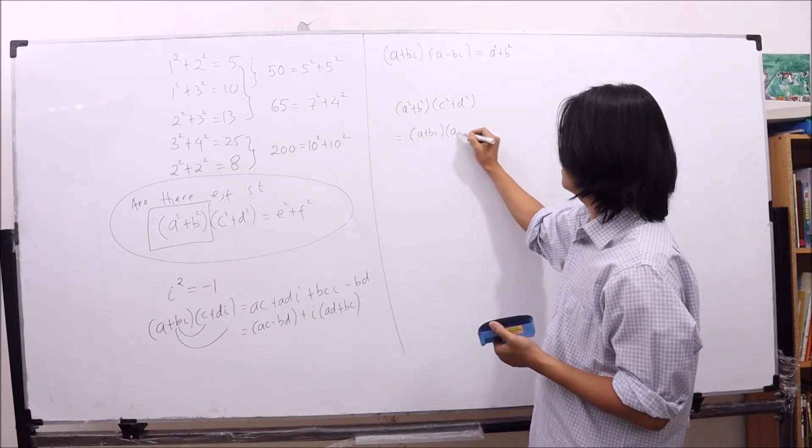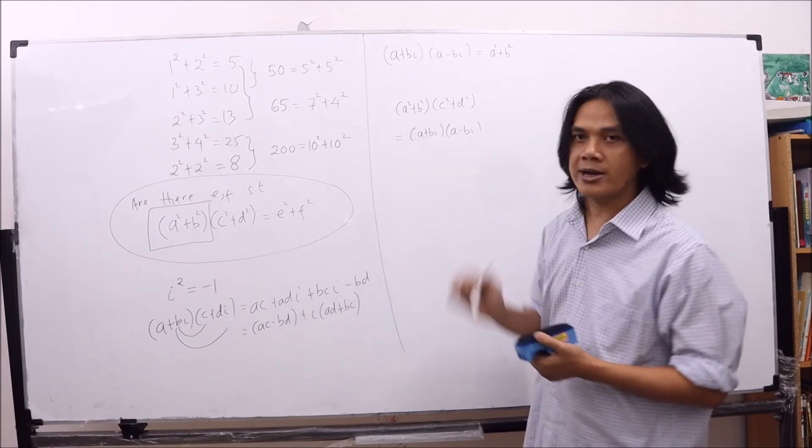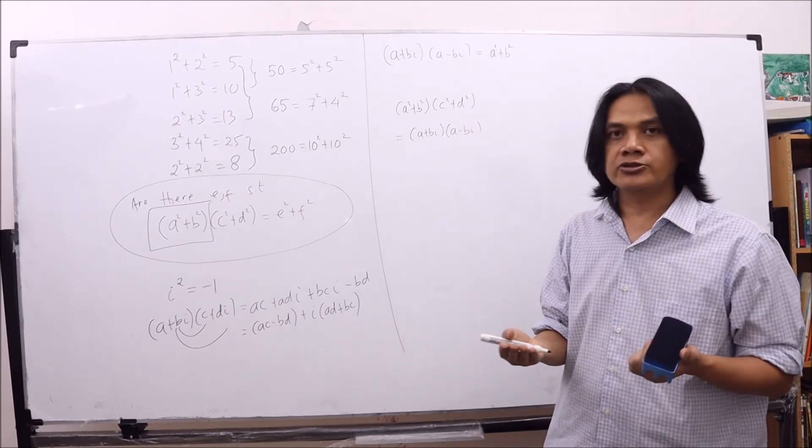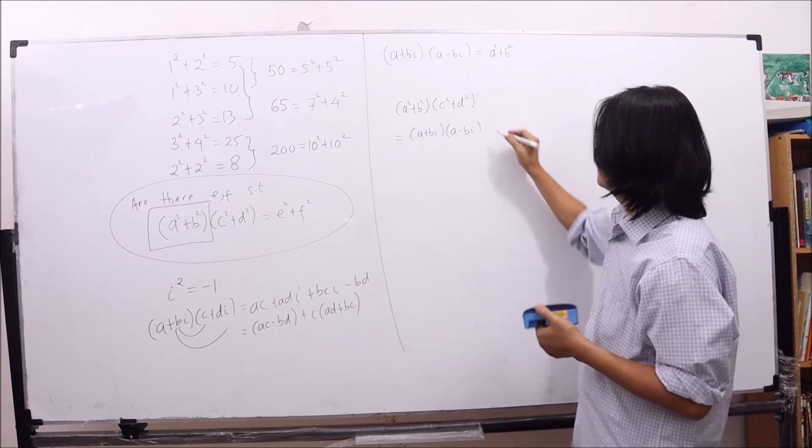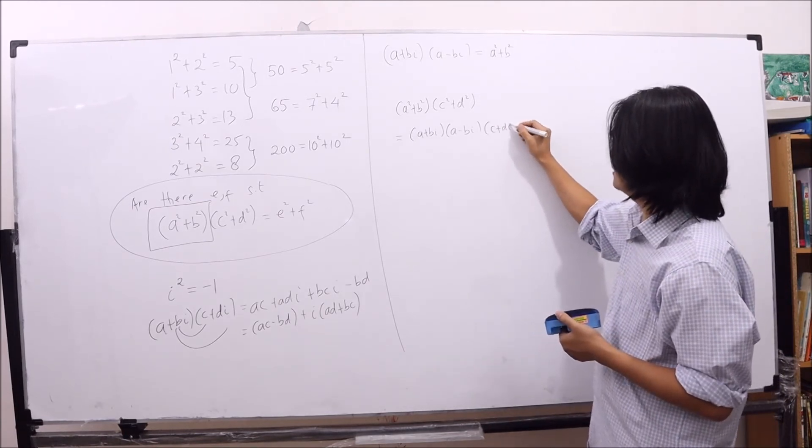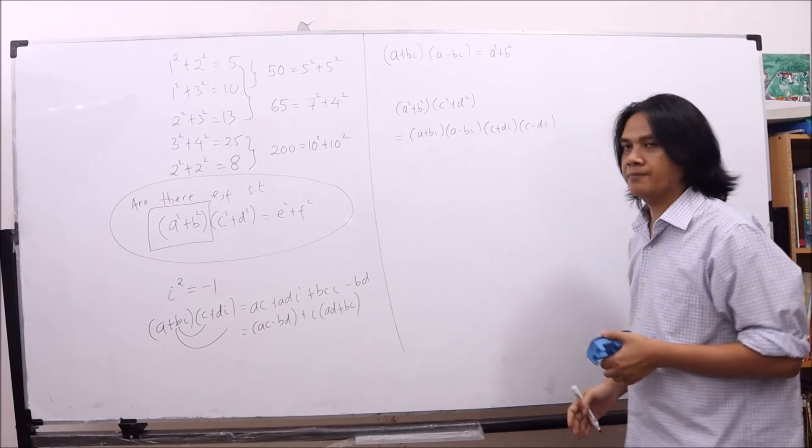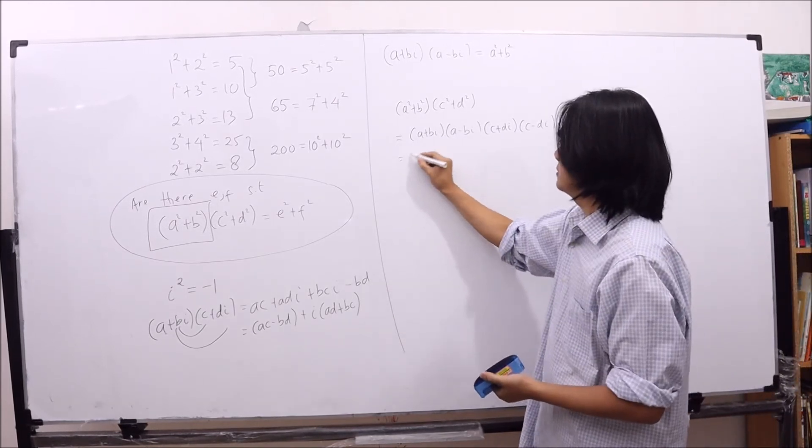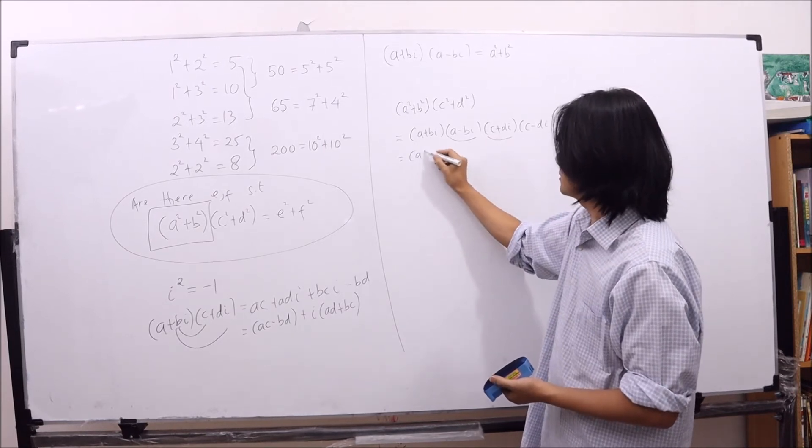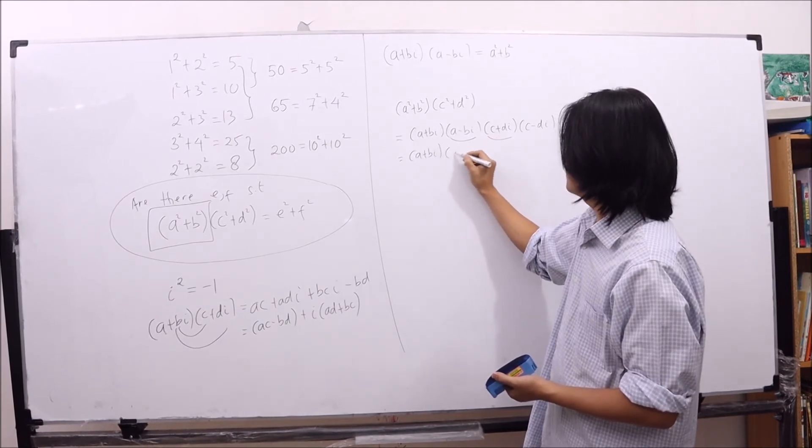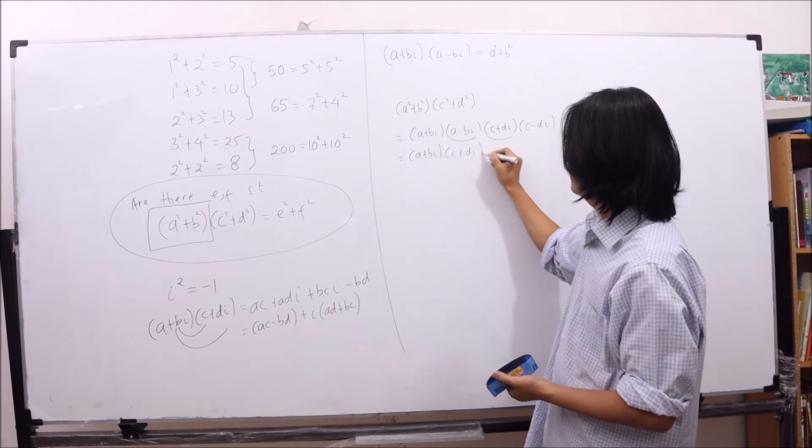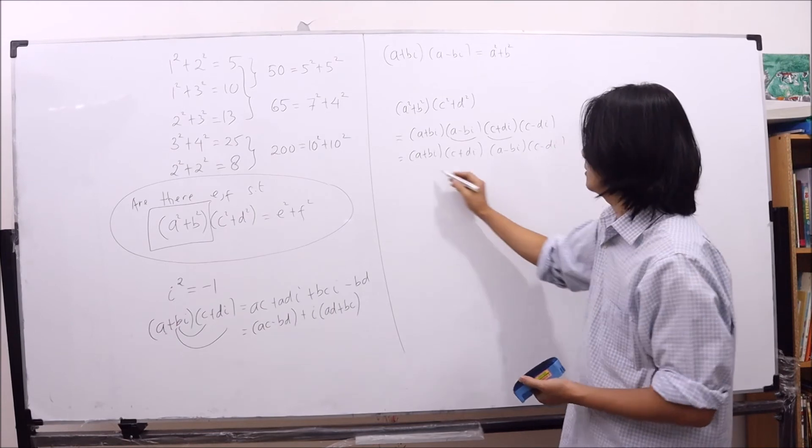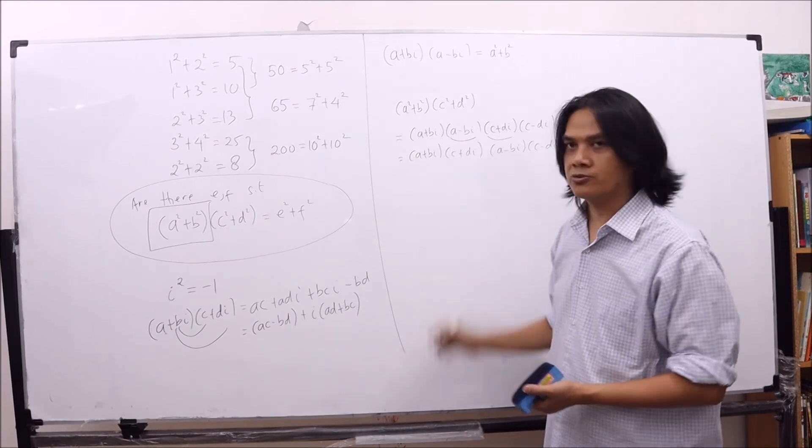Then the left-hand side can be written as a squared plus b squared times c squared plus d squared is a plus b i times a minus b i. That's for a squared plus b squared. And then for c squared plus d squared, we can also do the same. We have c plus d i times c minus d i. Now we will swap the two. So we have a plus b i times c plus d i, a minus b i times c minus d i. And then we multiply these two together.